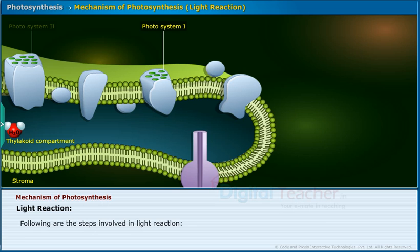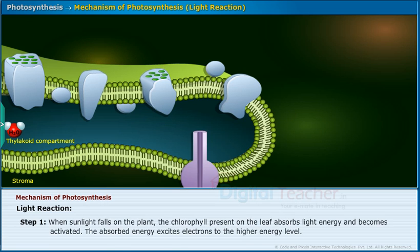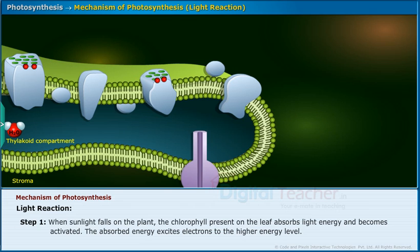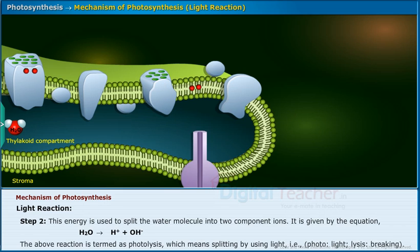Following are the steps involved in light reaction. Step 1: When sunlight falls on the plant, the chlorophyll present on the leaf absorbs light energy and becomes activated. The absorbed energy excites electrons to a higher energy level.